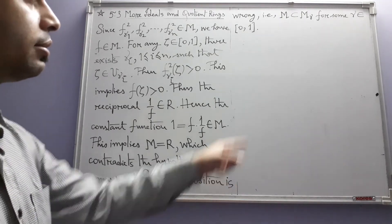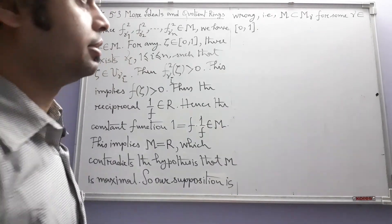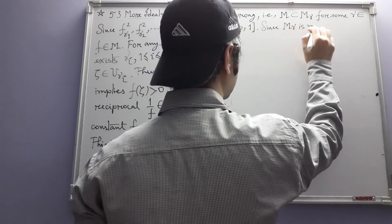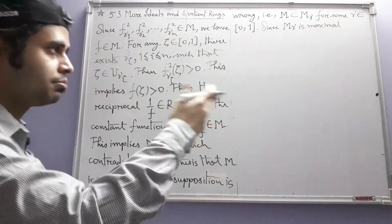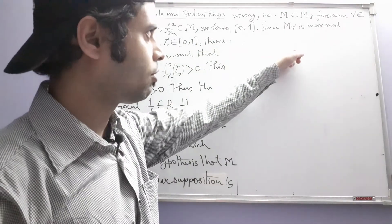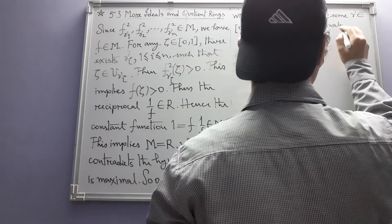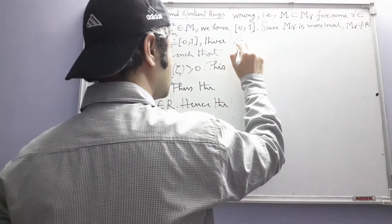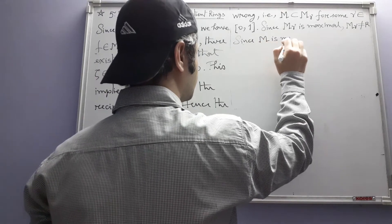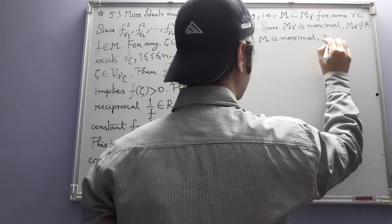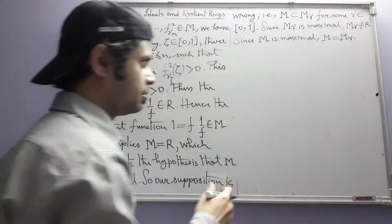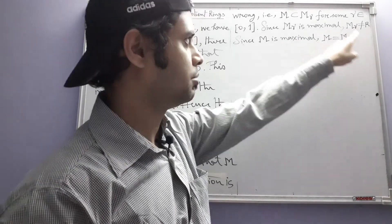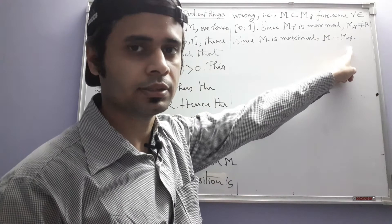Now we are going to use the fact that m is the maximal ideal. Since m_gamma is maximal, this we are getting from example 5.3.2, because all m_gammas are maximal, we have proved there itself. Since m_gamma is maximal, m_gamma is not equal to R. Since m is maximal, we must then have m is equal to m_gamma. That is because maximality of m implies that m_gamma is either equal to m or equal to R. But since m_gamma is maximal, this is not possible. So the only possibility is this, and that's what we wanted to prove.